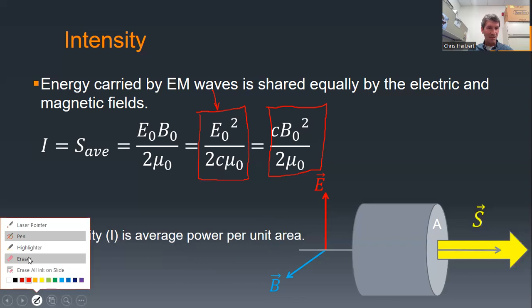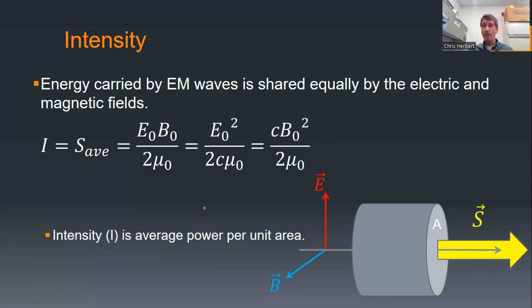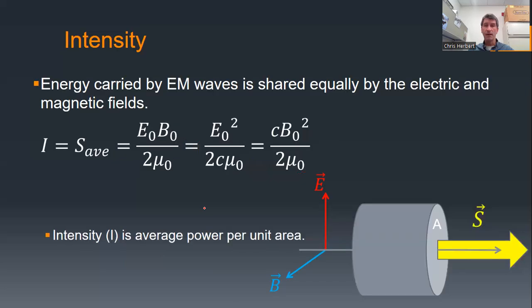Let me erase all the ink on the slides. That's about it for intensity. There is not much more to really say about it, other than when we look at something, we are not seeing the electric field. We are not seeing the magnetic field. We are seeing intensity, because intensity is, once again, how concentrated the energy is per unit time. What is flowing into our eyes?